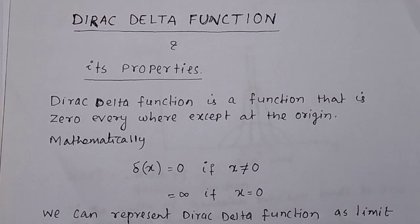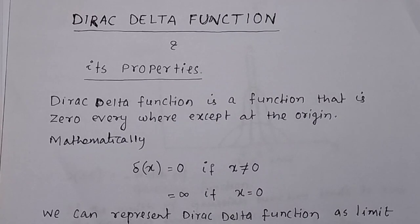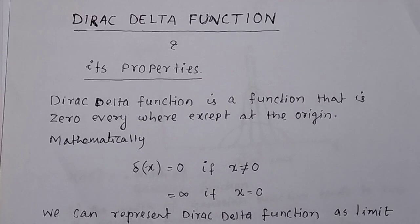In this video, we will discuss the Dirac delta function and its properties. The Dirac delta function is a special type of function that is zero everywhere except at the origin.